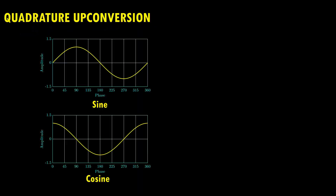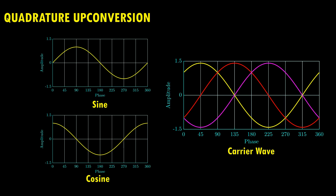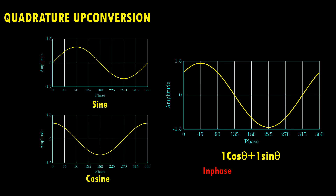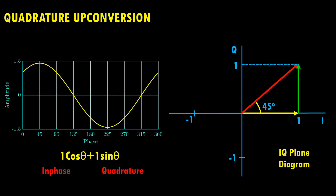Let's understand quadrature modulation with a simple summation of sine and cosine waves. Suppose we want to generate an RF carrier waveform with a phase shift of 45, 135, 225, and 315 degrees. This can be achieved by a simple summation of sine and cosine waves. For example, summing cosine and sine terms with equal amplitudes results in a waveform with an angle of 45 degrees. The cosine term in the summation is known as the in-phase term, while the sine term is known as the quadrature term.